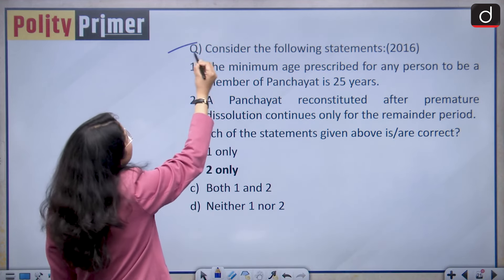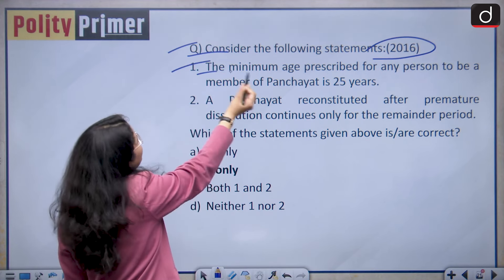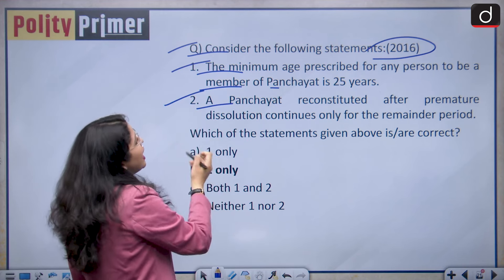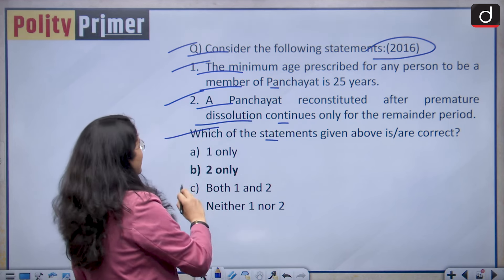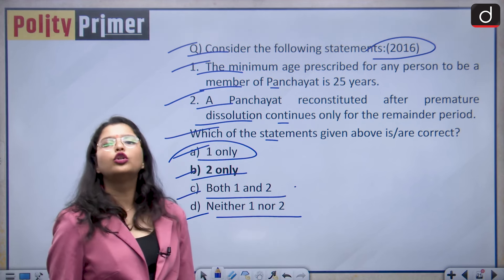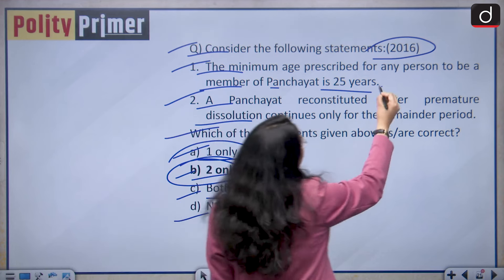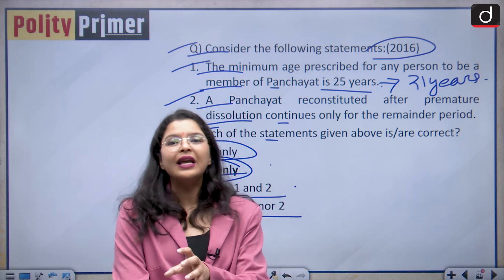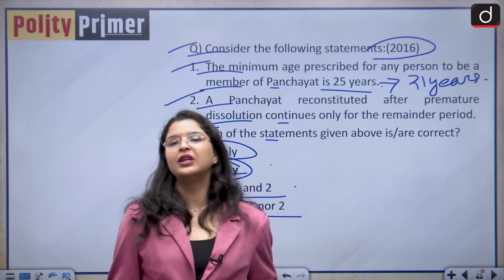Let us discuss another question. Consider the following statements — this is a PYQ asked in 2016. Statement 1: the minimum age prescribed for any person to be a member of a Panchayat is 25 years. Statement 2: a Panchayat reconstituted after premature dissolution continues only for the remainder of the period. Which of the statements is correct? Options: A is 1 only, B is 2 only, C is both 1 and 2, D is neither. The correct answer is option B — 2 only. Statement 1 is incorrect because the minimum age is not 25 years, it is 21 years. If a person is above 21 years, they are eligible to be a member of the Panchayat.